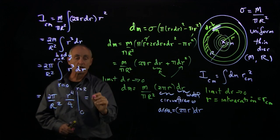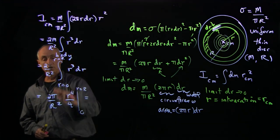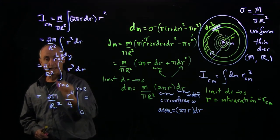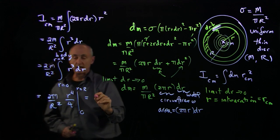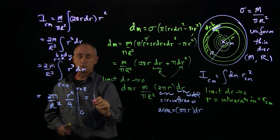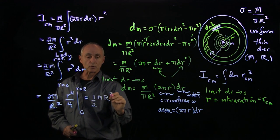And when we put that in, the 2 cancels the 4. So we have the 2 over the 4 is 1/2 mr².